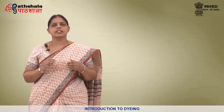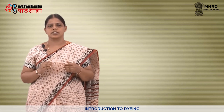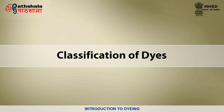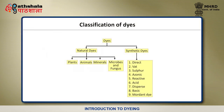Now let us go to the final content of the module — classification of dyes. Common classification of dyes are based on the sources from which they are taken. They could be classified as natural and synthetic dyes. Natural dyes are classified into plants, animals, minerals, and the fourth one is microbes and fungus. Synthetic dyes are classified into 9 types: Direct, Vat, Sulphur, Azoic, Reactive, Acid, Dispersed, Basic and Mordant.